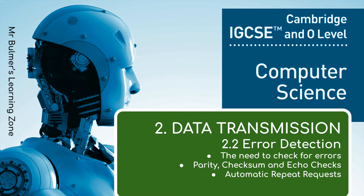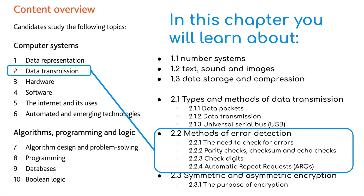Welcome back to the third video in this second topic: data transmission. Here we're going to be looking at error detection and we're going to focus on the need to check for errors. We're going to look at different methods of error checking including parity checking, checksum and error checks, and we're going to look at automatic repeat requests.